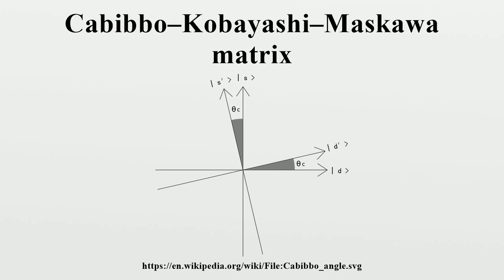Nobel Prize: In 2008, Kobayashi and Maskawa shared one half of the Nobel Prize in Physics for the discovery of the origin of the broken symmetry which predicts the existence of at least three families of quarks in nature. Some physicists were reported to harbor bitter feelings about the fact that the Nobel Prize Committee failed to reward the work of Cabibbo, whose prior work was closely related to that of Kobayashi and Maskawa. Asked for a reaction on the prize, Cabibbo preferred to give no comment.